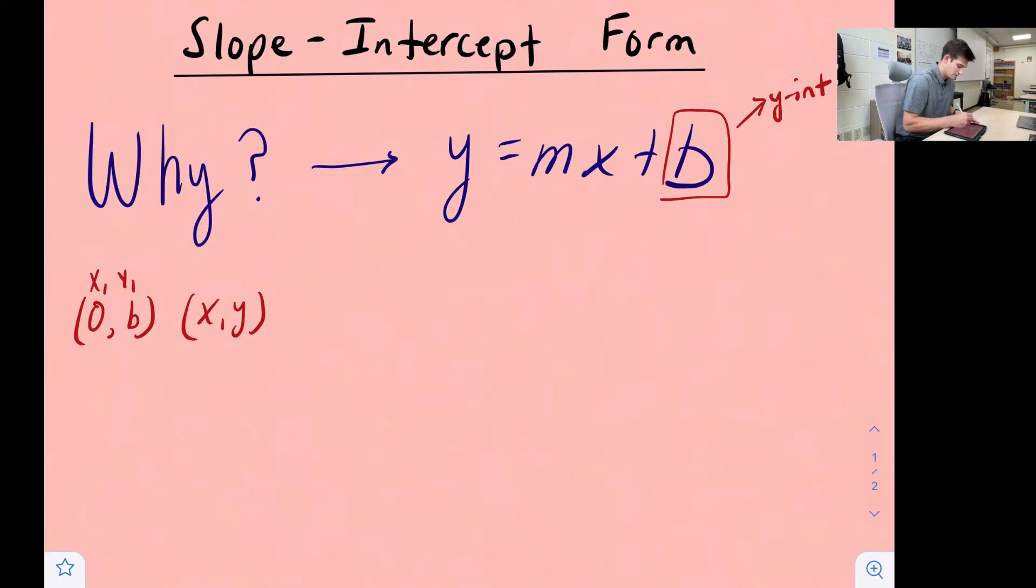This represents our y-intercept and we'll call this x sub one, y sub one, or just our first point. The other two variables we're going to talk about are x and y, and those represent just any point that's on our line, so we'll represent x and y as our second point, x sub two and y sub two.